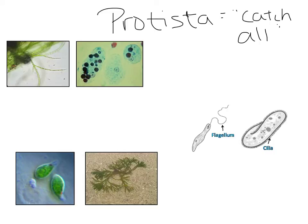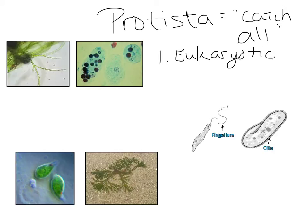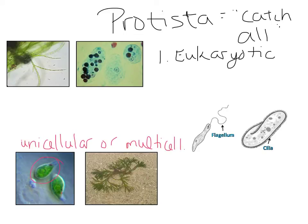Because Protista is in the eukaryotic domain, these cells have to be eukaryotic — they have membrane-bound organelles, endoplasmic reticulum, chloroplasts, mitochondria, vacuoles, vesicles, and a nucleus. In this kingdom, organisms can be unicellular or multicellular — there's no set distinction there.